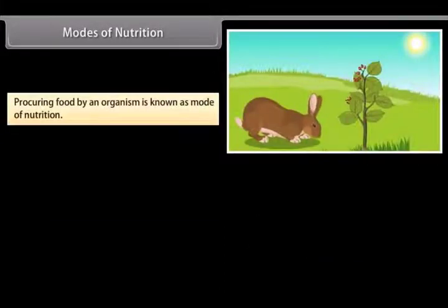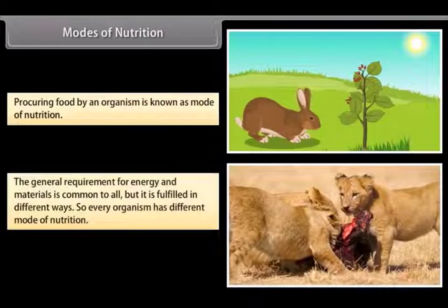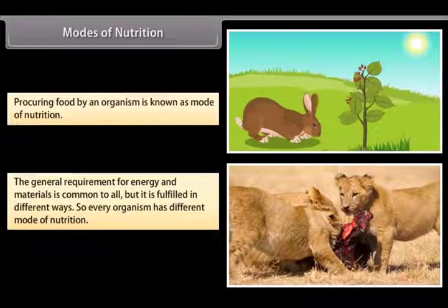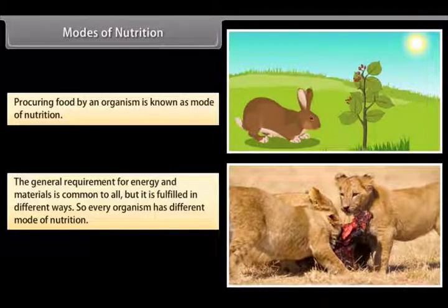Procuring food by an organism is known as mode of nutrition. The general requirement for energy and materials is common to all but it is fulfilled in different ways, so every organism has different mode of nutrition.